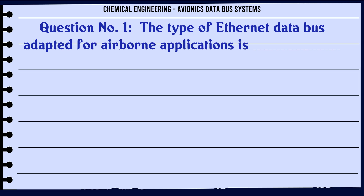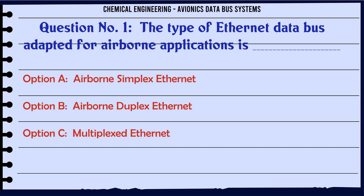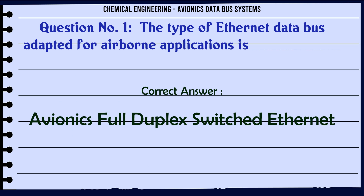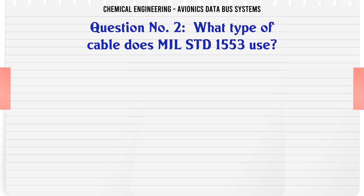The type of Ethernet data bus adapted for airborne applications is: A. Airborne simplex Ethernet, B. Airborne duplex Ethernet, C. Multiplexed Ethernet, D. Avionics full duplex switched Ethernet. The correct answer is Avionics full duplex switched Ethernet.